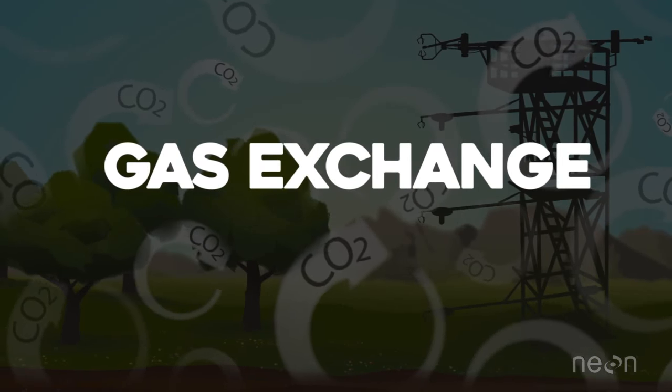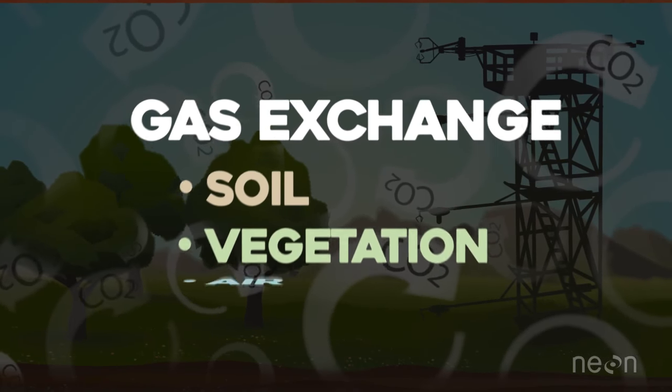It's the CO2 and other gases that are exchanged between soil, vegetation, and the air in an ecosystem.